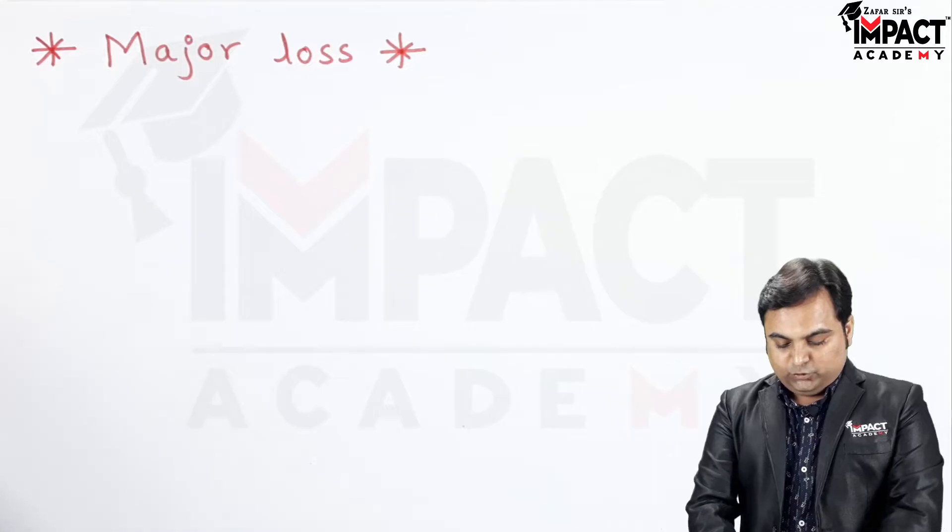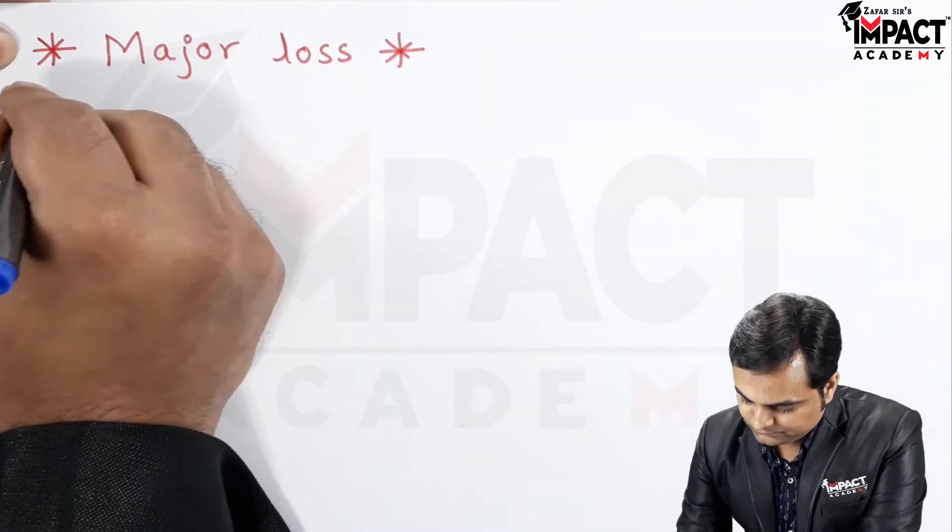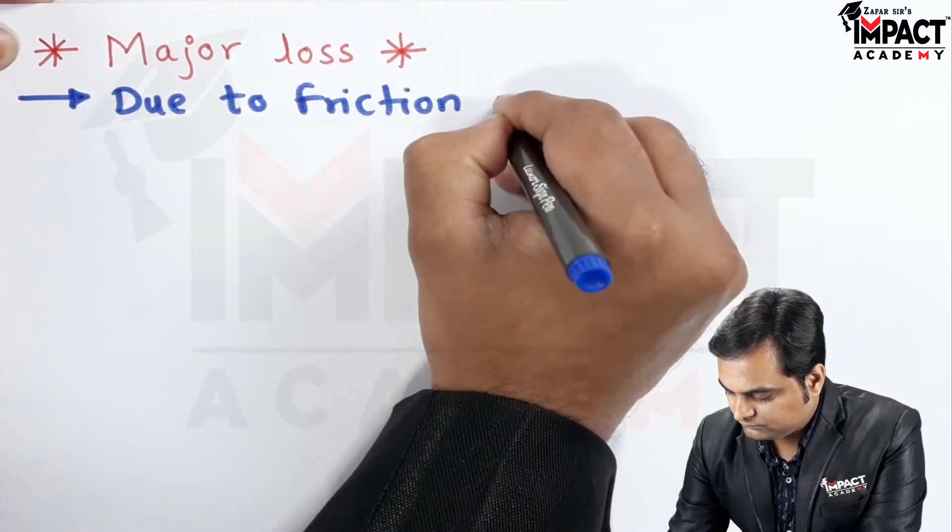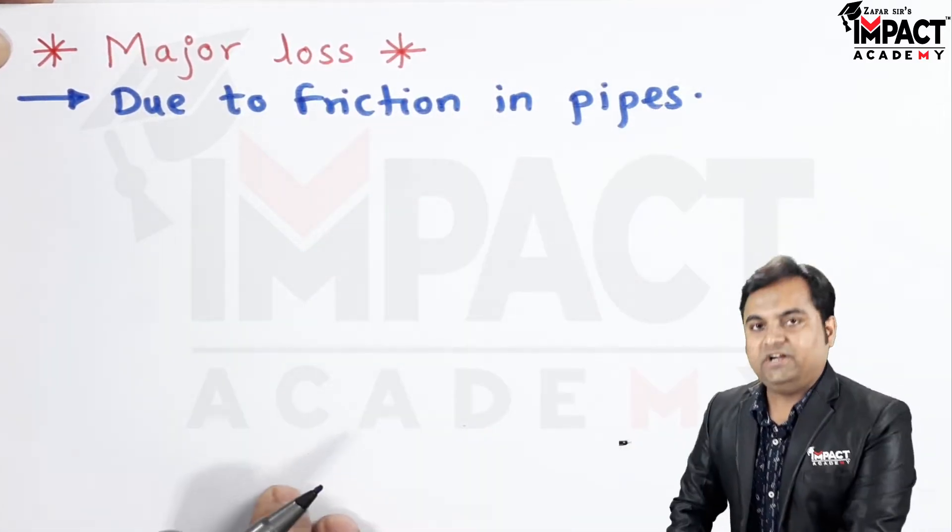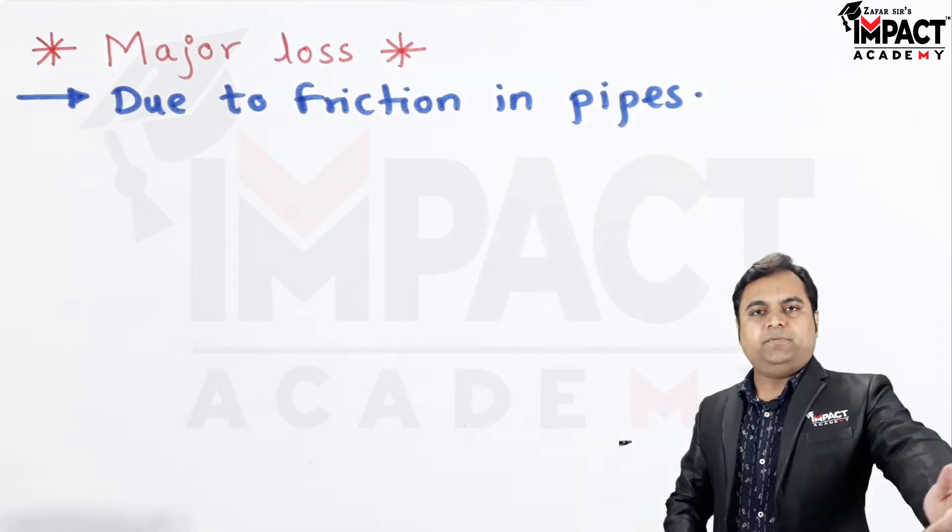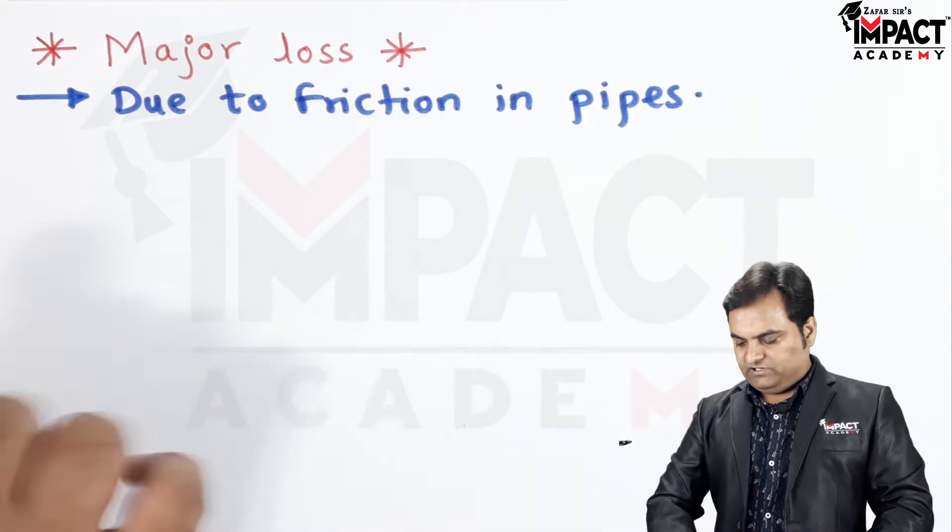Now major losses are due to friction in pipes. It means there will be a considerable amount of length of the pipe, so first I will draw the diagram.